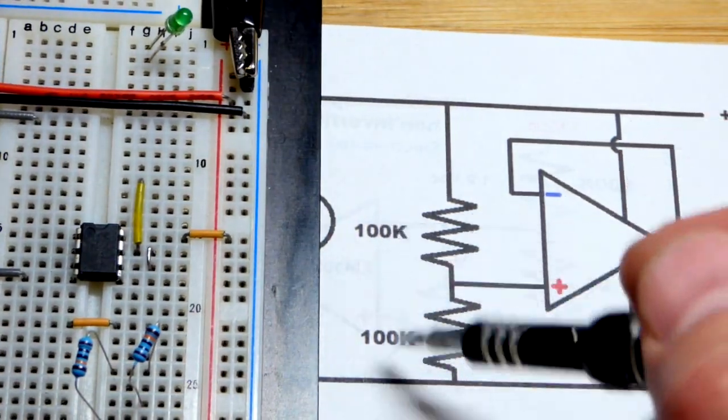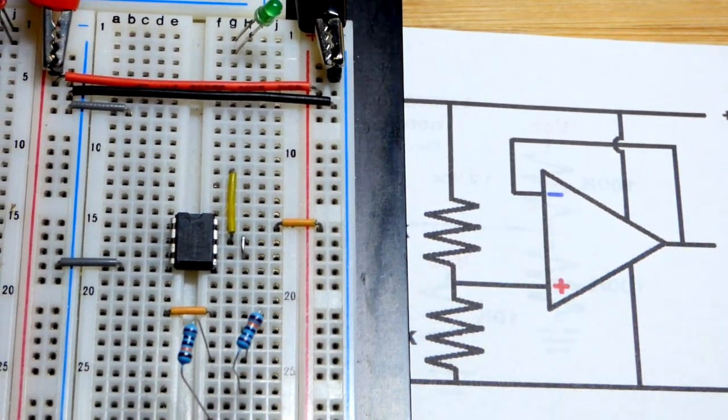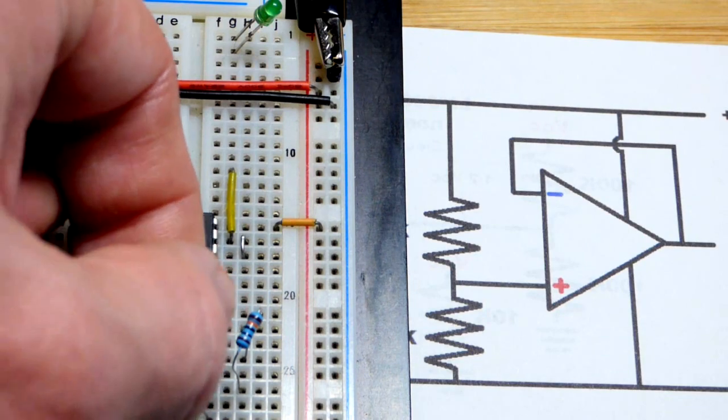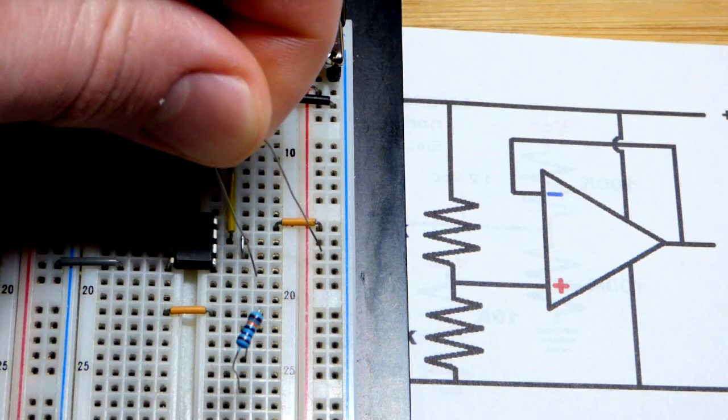In any case, the main point is we have that negative feedback right there. Then we set a voltage and we want half of the total voltage. We're going to use 100 kilohm resistors—they just have to be equal value, exact value doesn't matter.